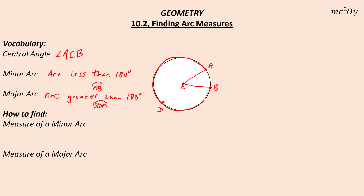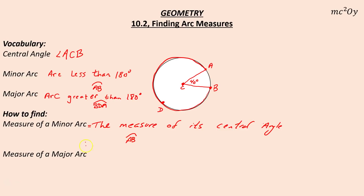To define the measure of a minor and a major arc: the measure of a minor arc is equal to the measure of its central angle. So if I were to define this angle as 40 degrees, that would mean the measure of angle ACB is equal to the measure of arc AB, which is equal to 40 degrees. So arc AB is 40 degrees because central angle ACB is 40 degrees — these two measurements are the same.